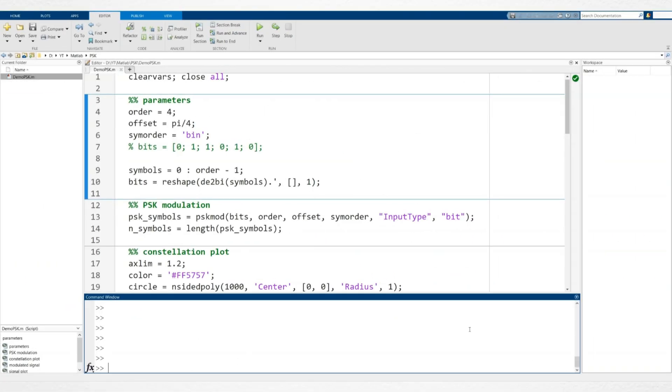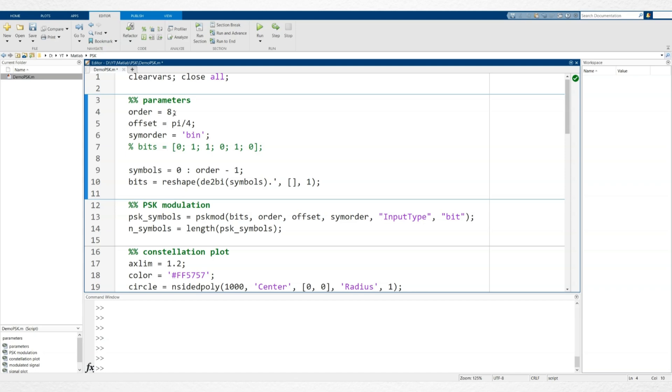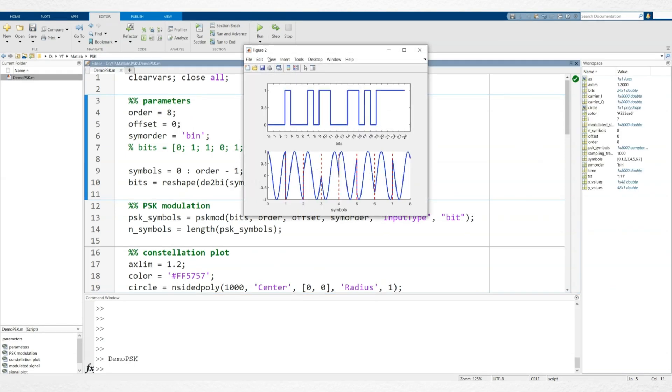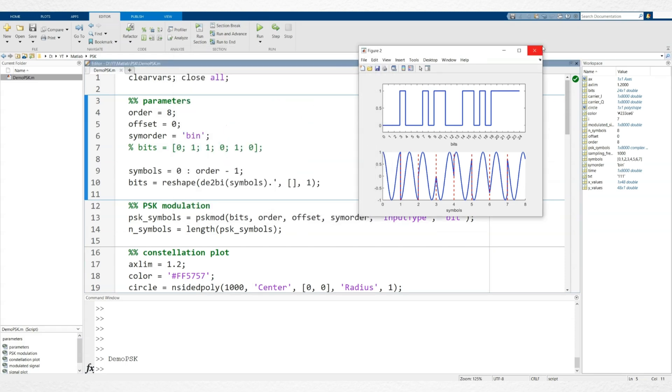Next, let's compare binary and gray symbol mapping. To see the difference, we'll use 8PSK with an offset of 0. Now, let's switch to gray mapping and observe the effect.